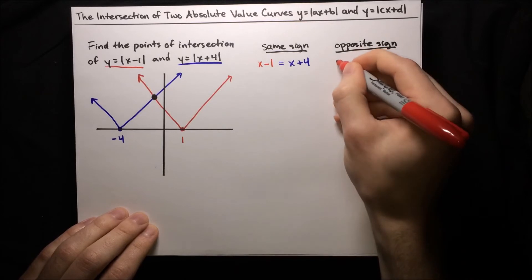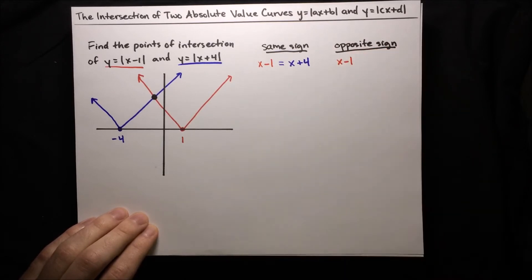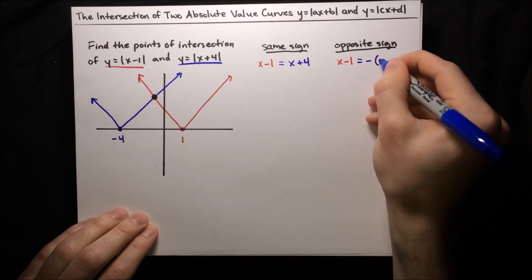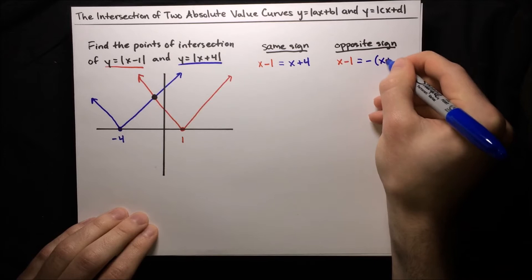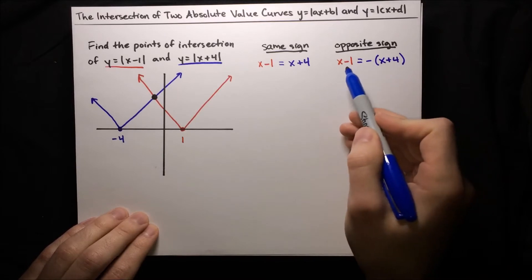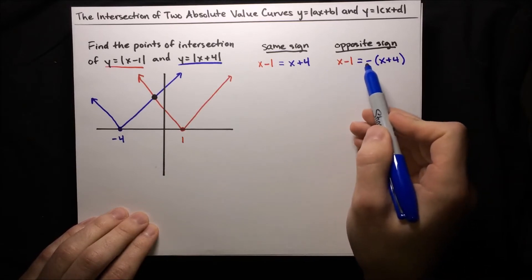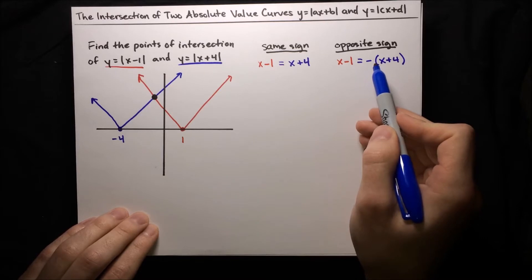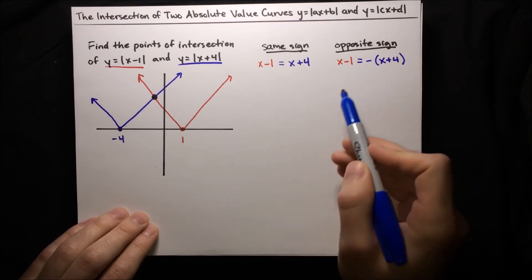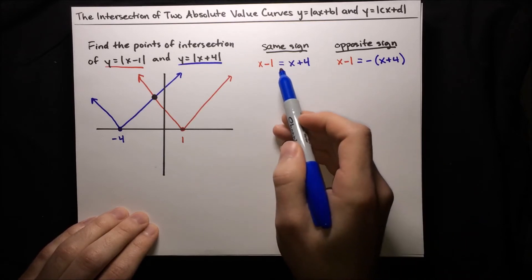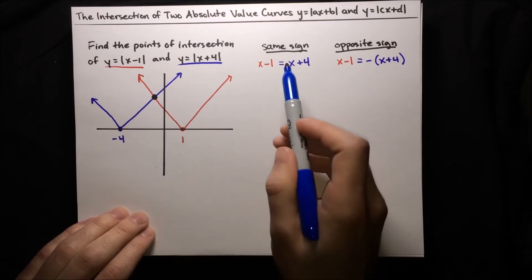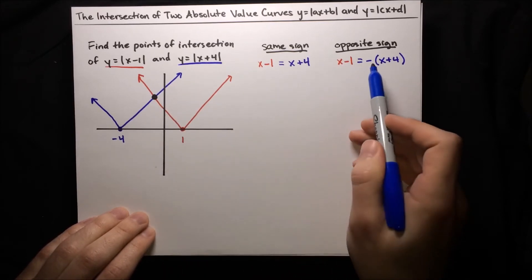For the opposite sign case, the arguments are negatives of each other. So we can say x minus 1 equals negative of x plus 4. We could also say negative of x minus 1 equals x plus 4 — it doesn't really matter which one we put the negative on, because if one is the negative of the other, then the other is also the negative of the first. So we've got two possibilities, but we've only got one point of intersection, so only one of these possibilities is going to actually be true.